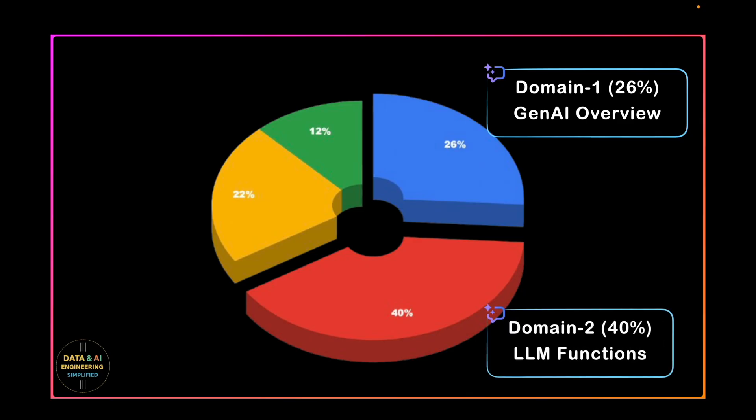Domain 2 is Snowflake Gen AI and LLM Functions with 40% weightage. This domain expects you to know different Gen AI and LLM features supported by Snowflake including Cortex features, Cortex Search, Cortex Analyst, Cortex Agent, Vector Functions, and helper functions including large language model capabilities, latency requirements, and cost functions. This also covers structured vs unstructured data analysis use cases including chat interface use cases.